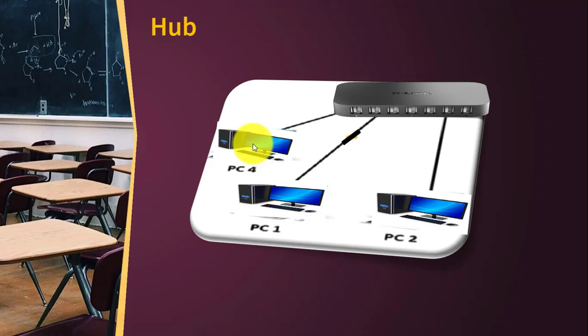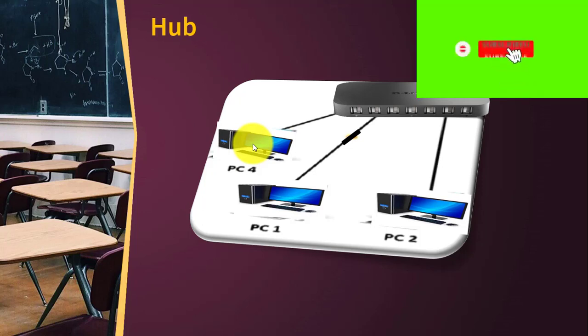Whereas the switch sends the message to the specific device only. Nowadays, switches are very common and hubs are not used in computer networks. If you want to connect two different networks, you use a router. Switch is an intelligent device that sends messages to the specific device only, whereas a hub broadcasts messages to all connected devices. This is why the hub is not recommended and the switch is highly recommended for computer network communication. That's all for today. If you liked this video, you can share it. If you have any questions, you can ask in the comment section — I will definitely respond. If you haven't subscribed to my channel, please subscribe and click on the bell icon to get more videos. Thank you and have a great day.